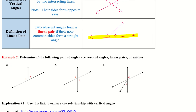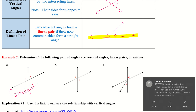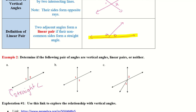Example 2: determine if the following pairs of angles are vertical angles, linear pairs, or neither. For example 2A, we have a straight angle here. Since we have a straight angle, we want to consider linear pairs. Angles 1 and 2 are adjacent, and linear pairs also have to be adjacent — so they are adjacent. Therefore, A is going to be a linear pair.